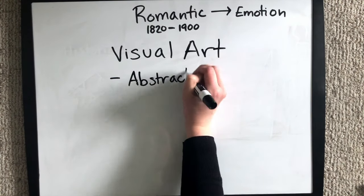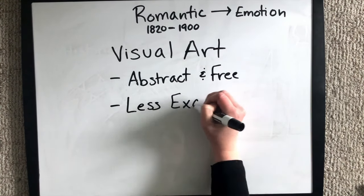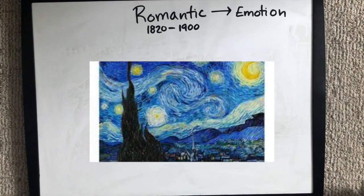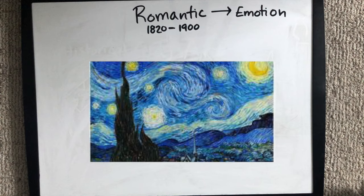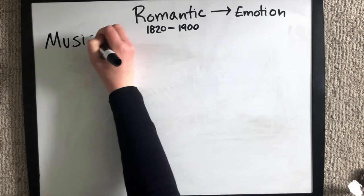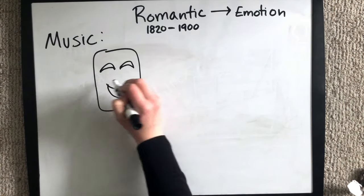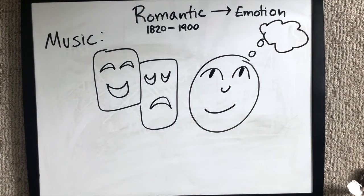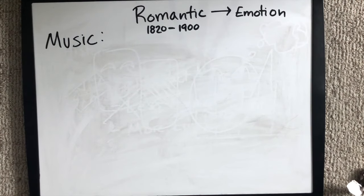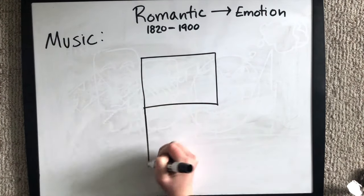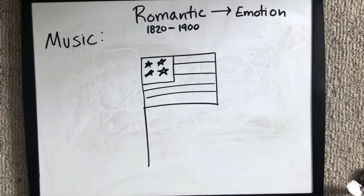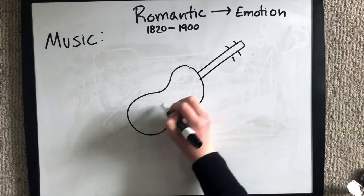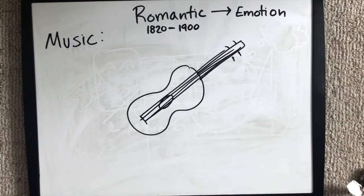Visual art at this time was more abstract and free — less exact and more emotional, as you can see in this example here. Music in this era was written to express thoughts, emotions, and feelings. Along with that, many composers wrote nationalistic music to show their patriotism and love of their country, studying folk music and using its themes and tonal patterns to influence their orchestral works.